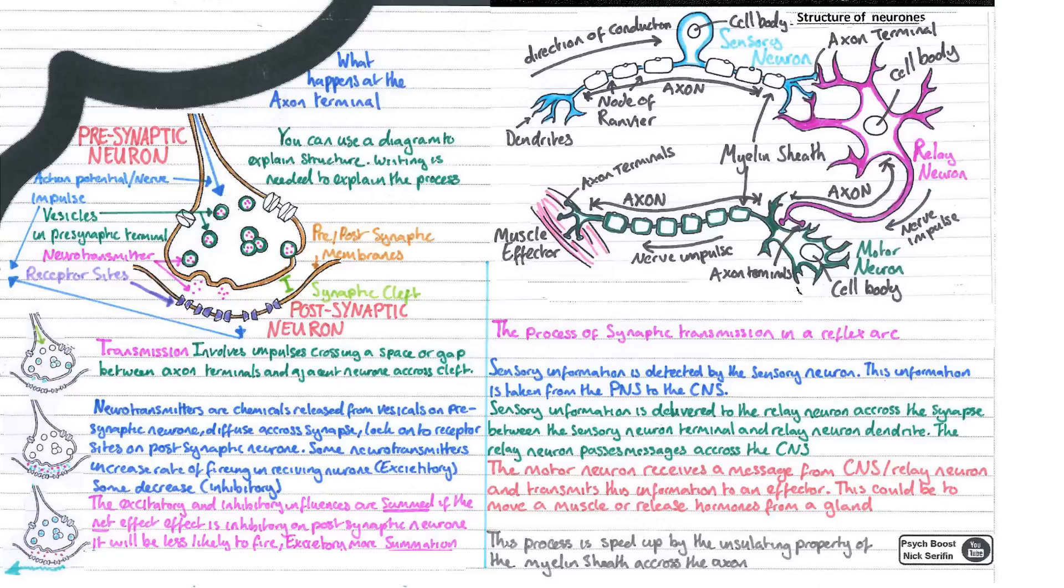One thing we'll come back to again and again, especially as we look at the later units, are the role of psychiatric drugs. Psychiatric drugs are generally used by increasing or inhibiting in some way this transmission process of neurotransmitters across the synapse. So it might be by blocking the receptor sites, it might be by influencing the reuptake of these neurotransmitters. These neurotransmitters, once they've been released, they don't just float around - they need to be used again. Neurons can fire many times a second, so these need to be taken back into the pre-synaptic neuron. That's a substantial amount of information in today's video.